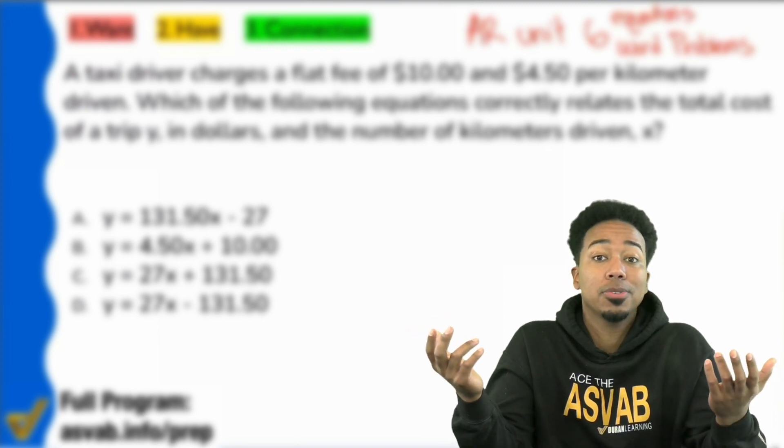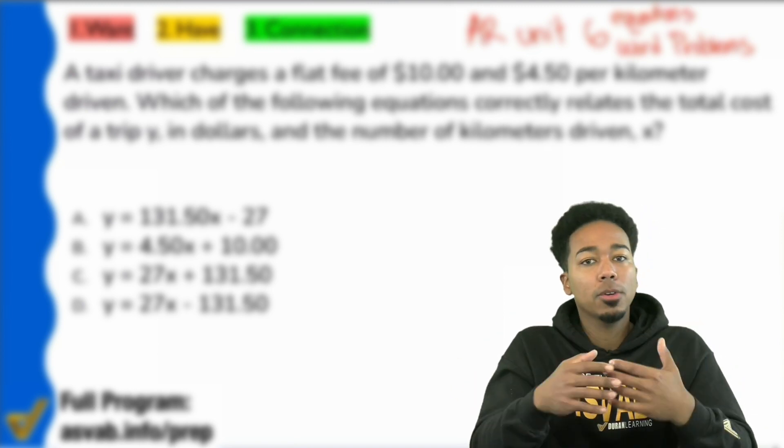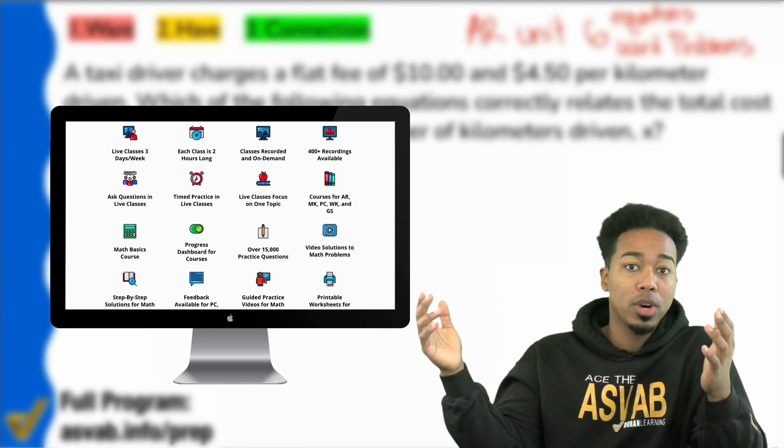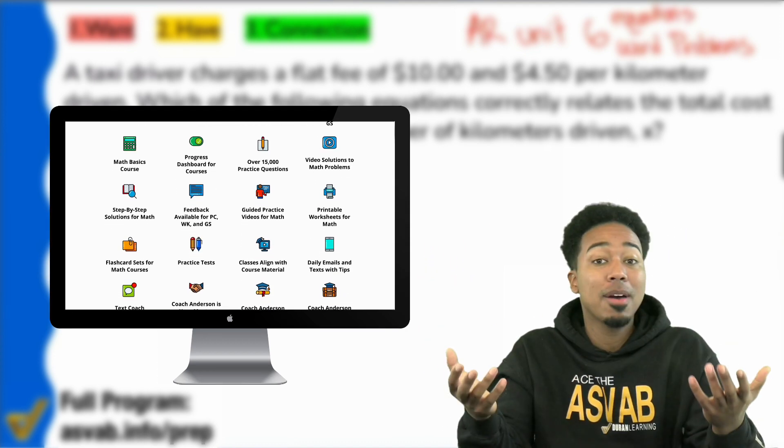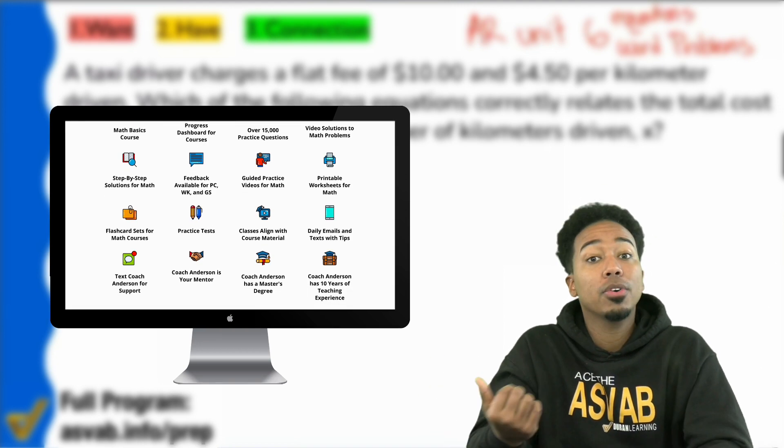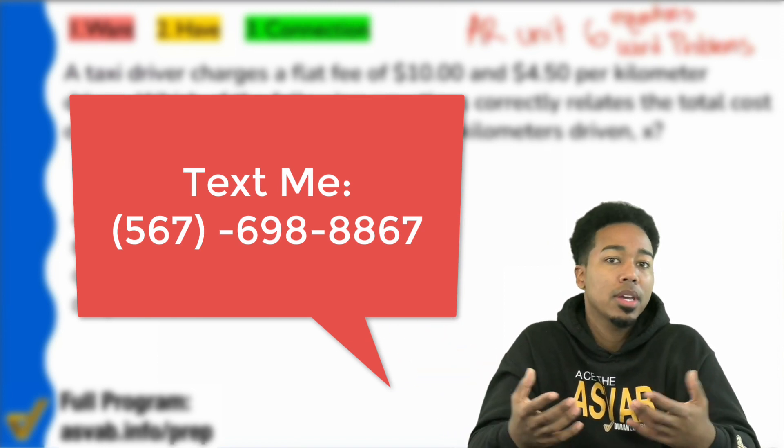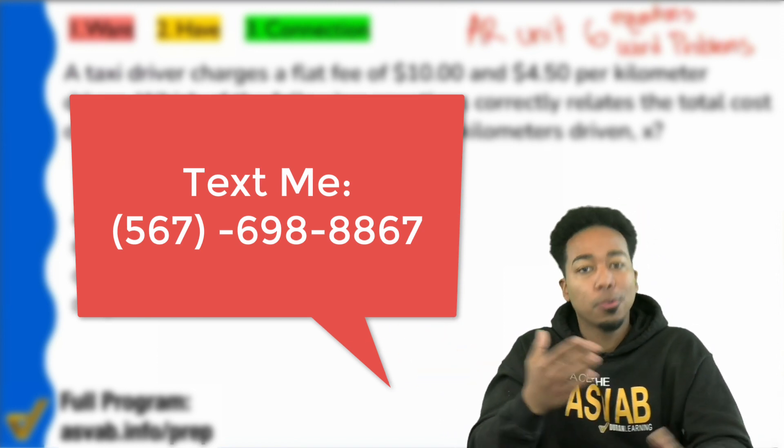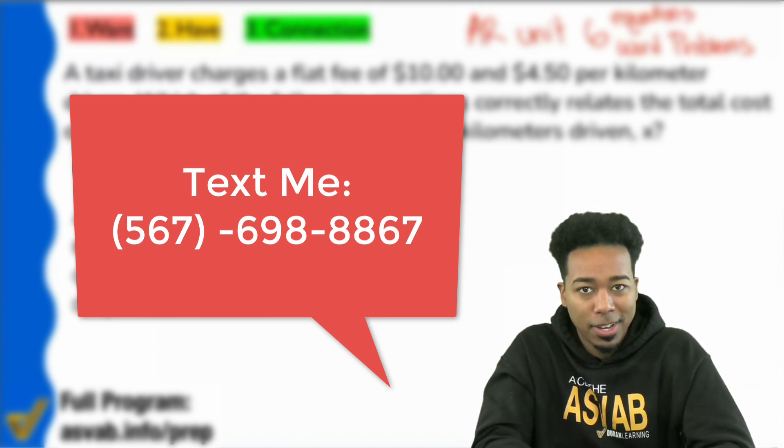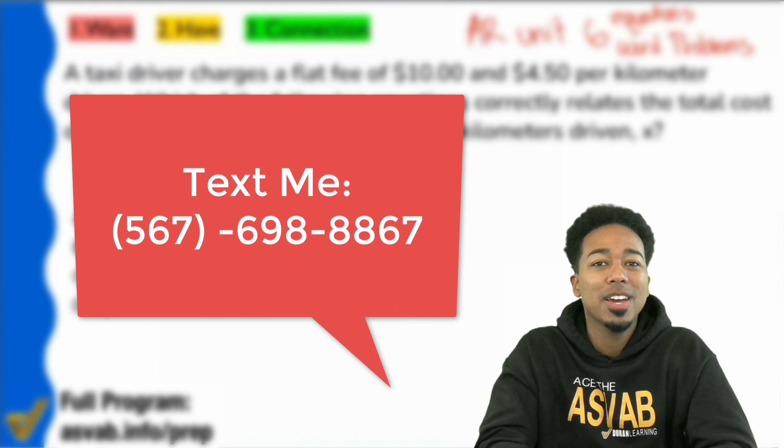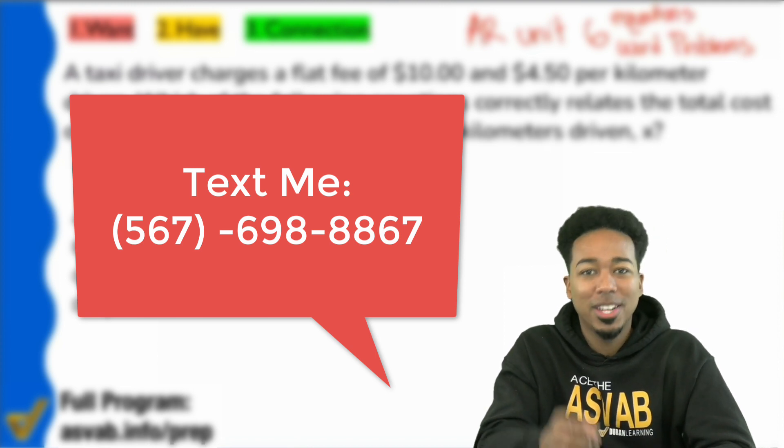Making it this far in this video, I'm going to say it's safe to assume that you like the way I teach. So if you want to learn more about my program, where you can get all of my practice questions, including 15,000, that will help you succeed with step by step solutions, a lot of them having video solutions, then go ahead and reach out to me. My phone number is 567-698-8867. That way you're not stuck in the same loop that so many people are stuck in with retaking the ASVAB over and over again, when the solution to getting a higher score is right here in front of your face.